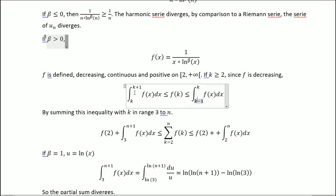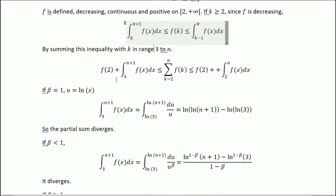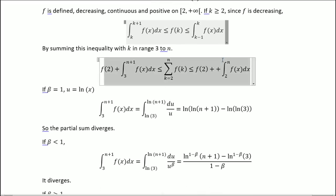So you get this inequality by the works on integrals. Then you will sum this inequality with k in range of 3 to n. So you will get this, and you will add f of 2 in both sides, because it will be fairly useful.